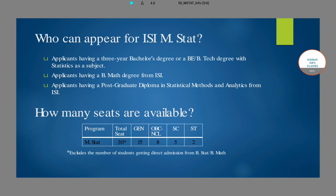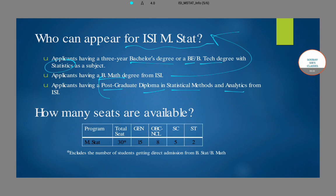Now let us talk about the eligibility criteria. For the ISI MSTAT program, you basically need to have a bachelor's degree — including a BE or BTech degree — but you need to have statistics as a subject. Applicants with an ISI BMATH degree are also eligible. Additionally, students who have completed the Post Graduate Diploma in Statistical Methods and Analysis, offered at the ISI Tezpur campus, can directly appear for the ISI MSTAT examination.